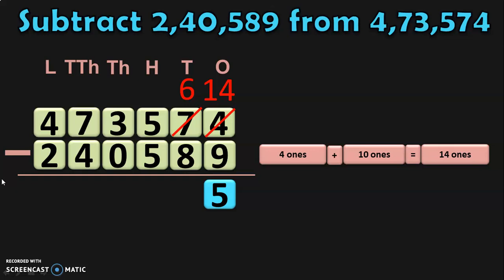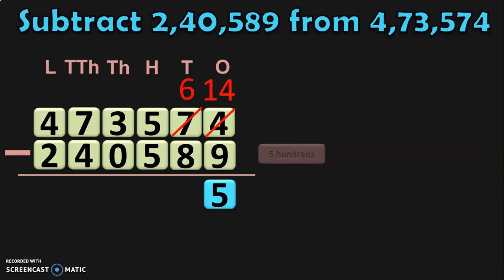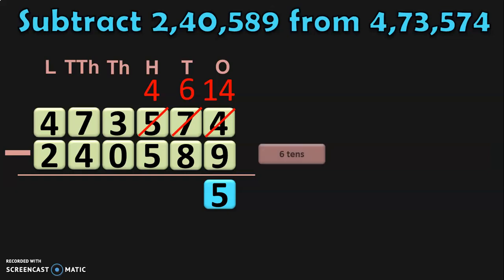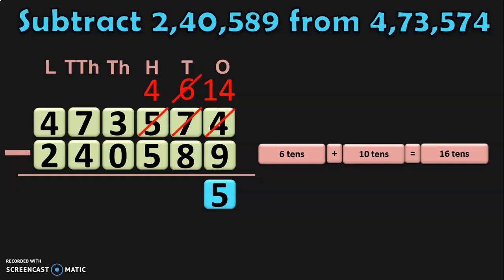Next, move on to the tens place where we have 6 minus 8. Since 8 is greater than 6, move to the hundreds place. In the hundreds place, we have 5 hundreds, which can be regrouped as 4 hundreds plus 10 tens. Retain the 4 hundreds in the hundreds place and take the 10 tens to the tens place. In the tens place, we already have 6 tens. 6 tens plus 10 tens gives you 16 tens. So, 16 minus 8 gives you 8.